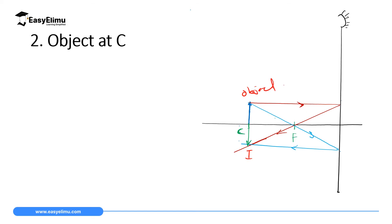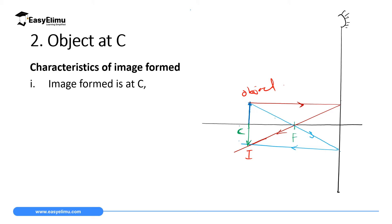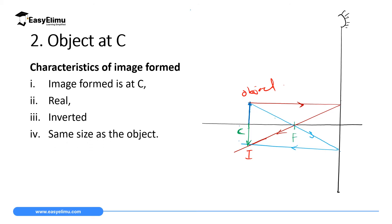For an object at C, the image distance from the mirror is the same as the object distance. The size of the image is equal to the size of the object, and the image is inverted. The characteristics are: the image is formed at C, the image is real, the image is inverted, and the image is the same size as the object.